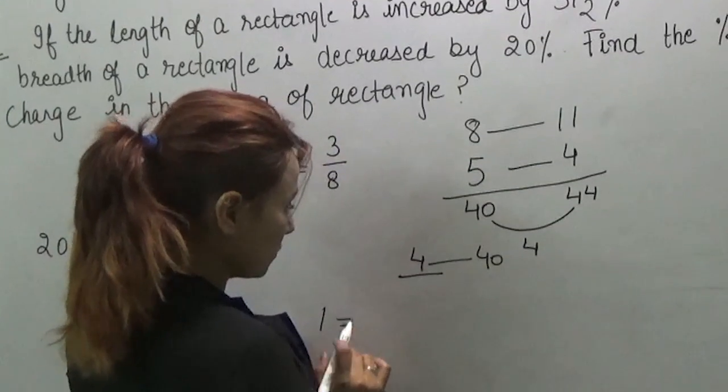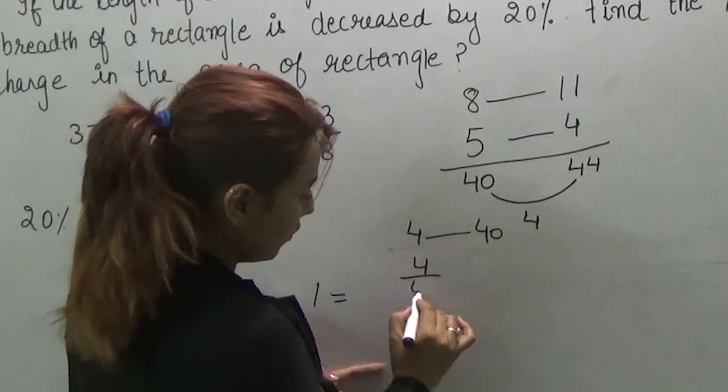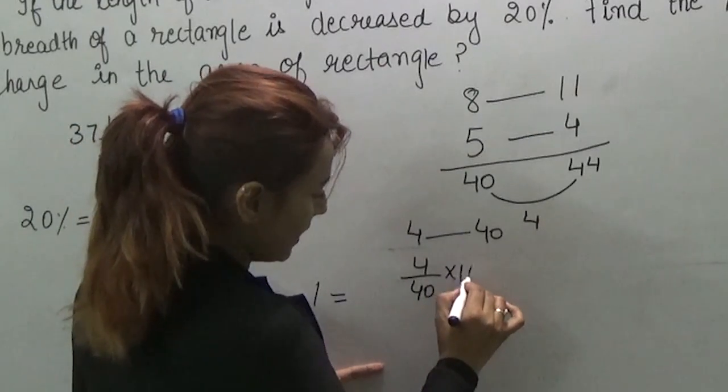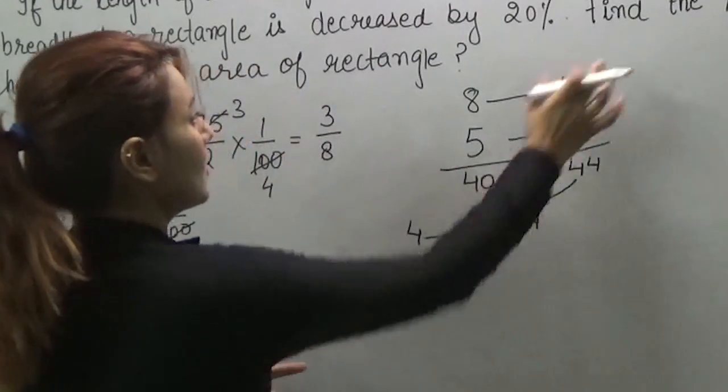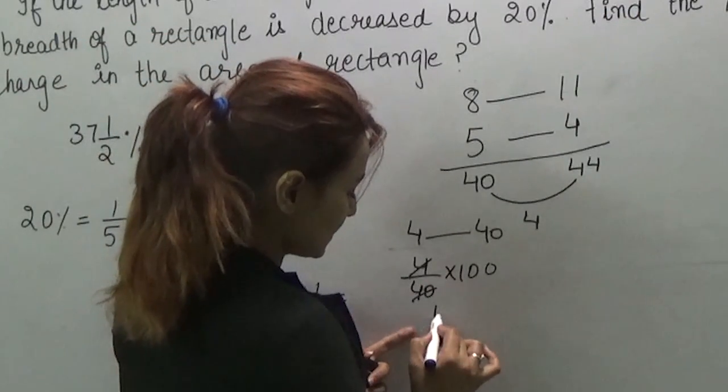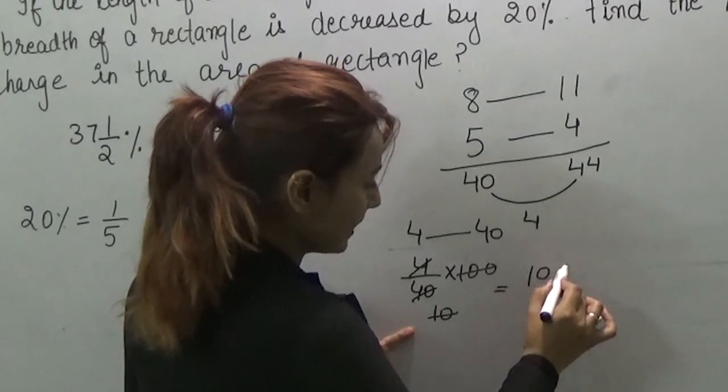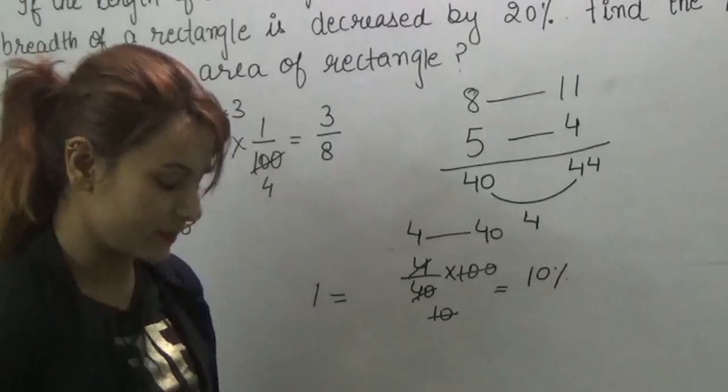What we want to find is 4 by 40 into 100, because we need to get the percentage change. We will put 100. So this is 10 and when we divide 100 by 10, we will get 10%. So 10% is the answer.